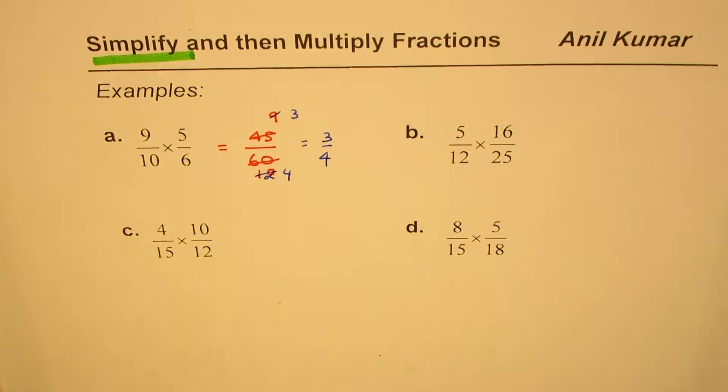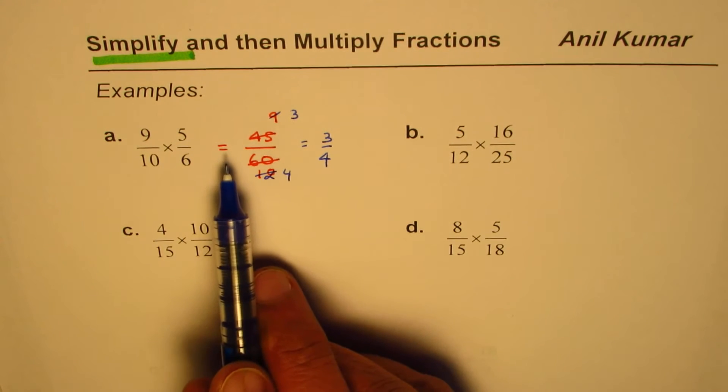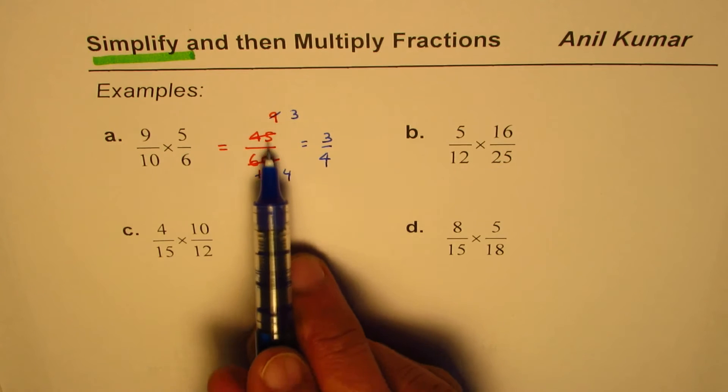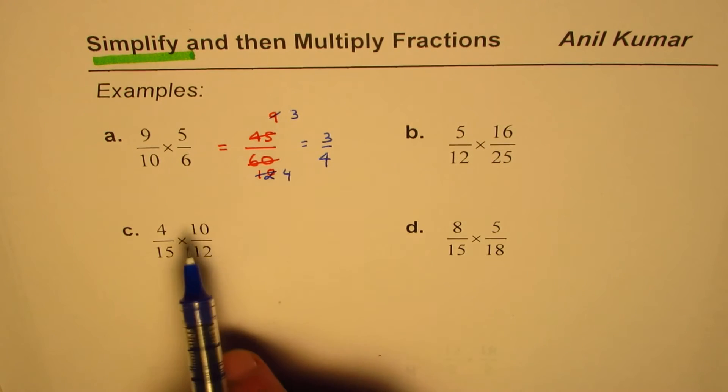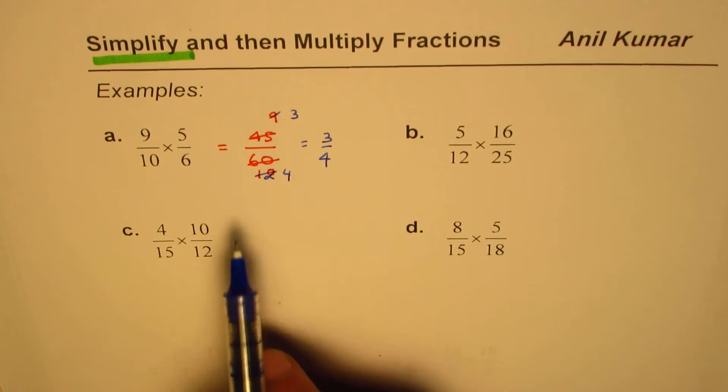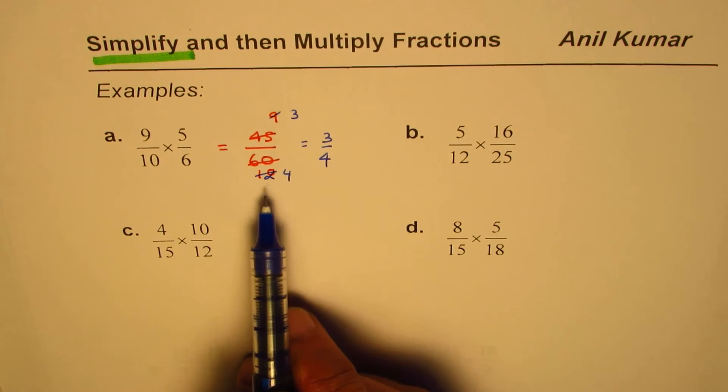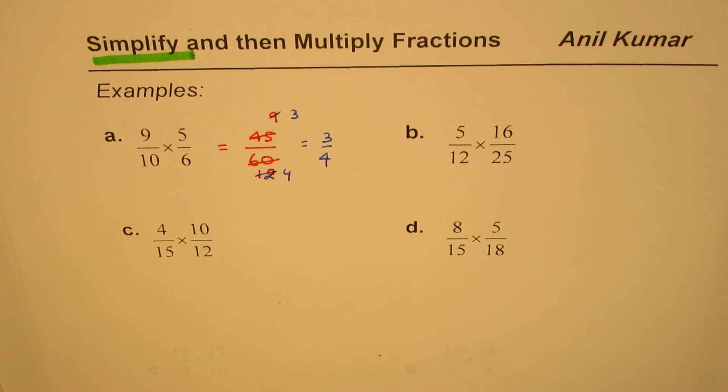In this method, as you have seen, we are involving bigger numbers, higher numbers, and so there is a possibility of error, as I just did. Let us avoid these errors and do a better job. That is why we are concentrating on simplify and then multiply.